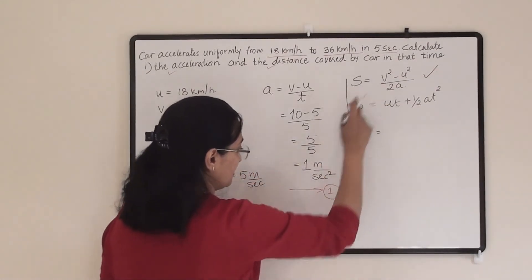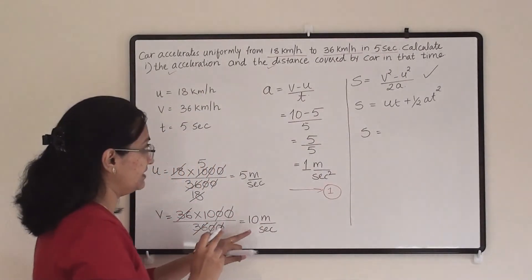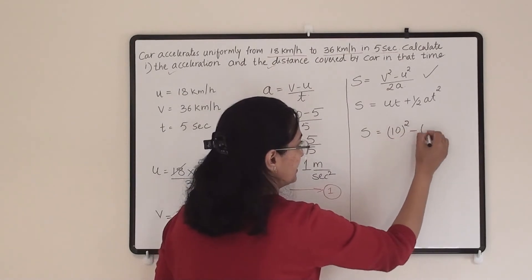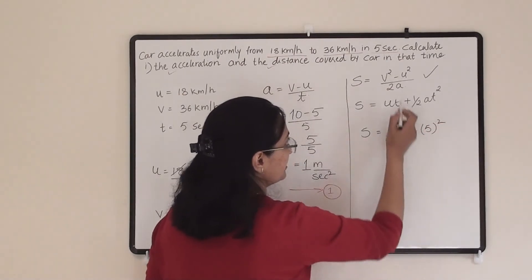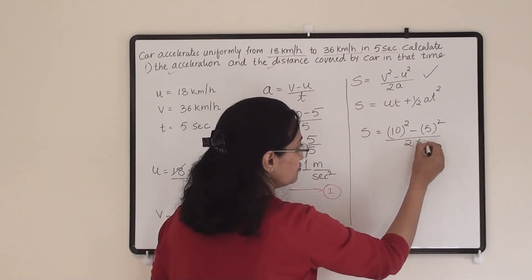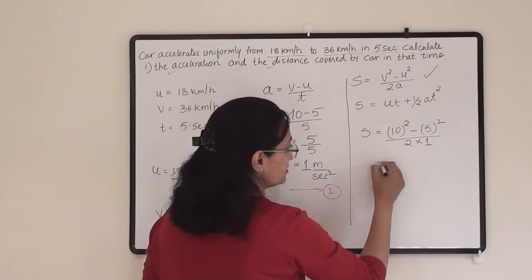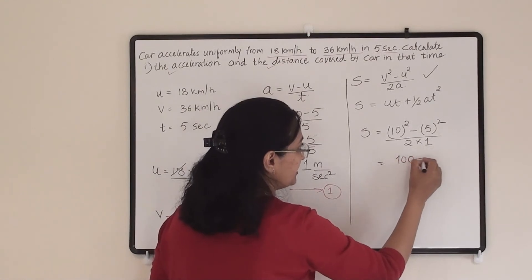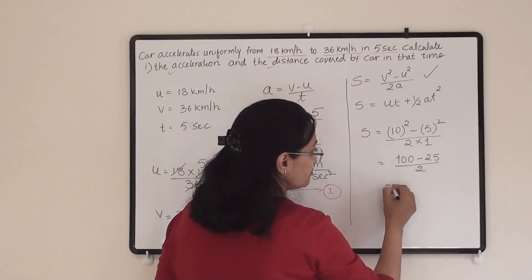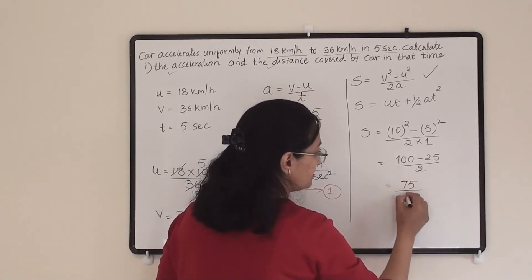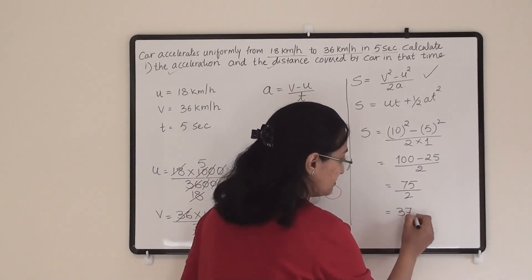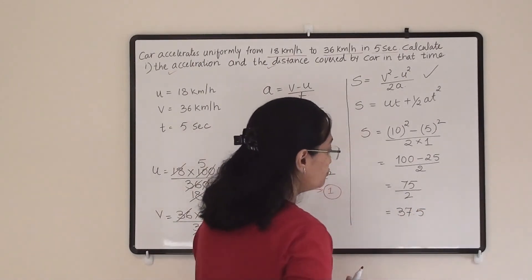So S = v² − u² / 2a. V is 10, so 10 squared minus 5 squared — since initial velocity is 5 — divided by 2 × 1, where 1 is our acceleration. That gives us 100 − 25 divided by 2, which is 75 divided by 2, and the answer is 37.5.